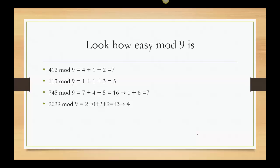Okay. So look how easy mod 9 is now. So if I give you 412 mod 9, 4 plus 1 plus 2 is 7. If I give you 113 mod 9, 1 plus 1 plus 3 is 5. 745 mod 9. 7 plus 4 plus 5. So 7 plus 4 is 11. Plus 5 is 16. We don't stop. Break it up more. 1 and 6 is 7. So every time you do a mod 9, get down to a single digit before you give me the answer. 2029, 2 plus 0 plus 2 plus 9. So 2 plus 2 is 4. 4 and 9 is 13. 1 and 3 is 4.